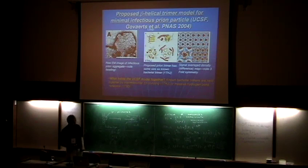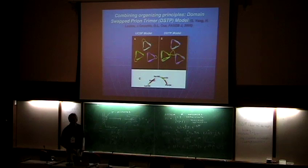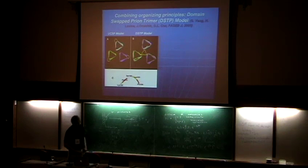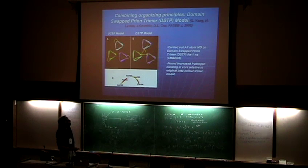Si-Chun Yang suggested: why don't we try domain swapping? We basically took the beta-helices from the UCSF model, took the top layer of each beta-helix - analogous to domain swapping in SH3 - and just swung it around cyclically, and that provides the glue. When we simulated that with all-atom molecular dynamics using AMBER out to one nanosecond, not only did we find that it held together, but we found increased hydrogen bonding to stabilize it in the core region.